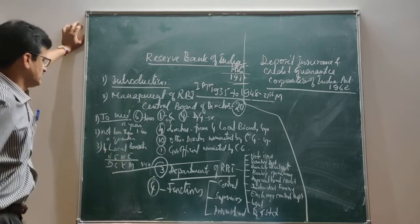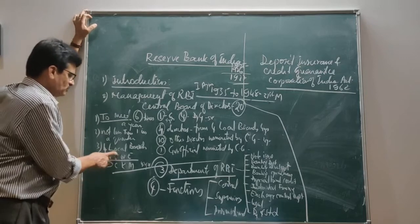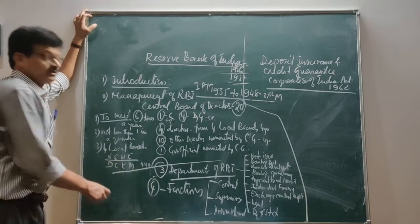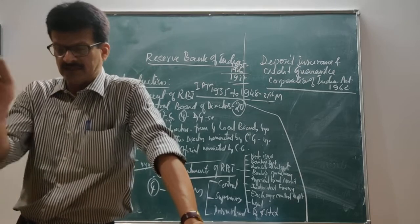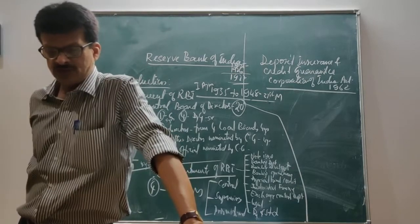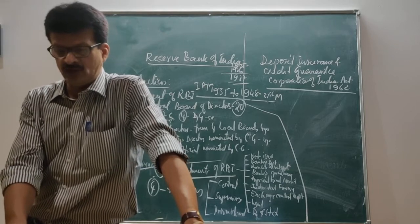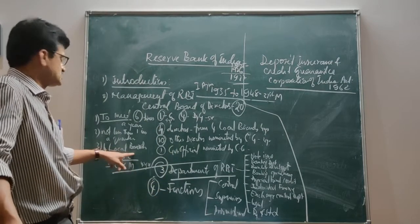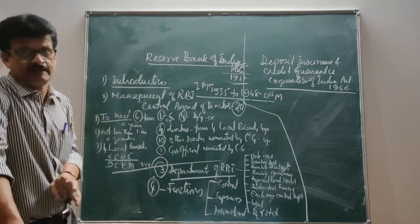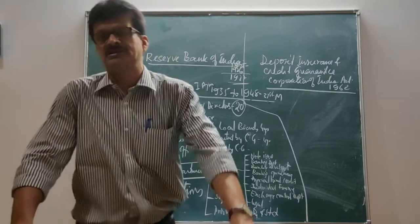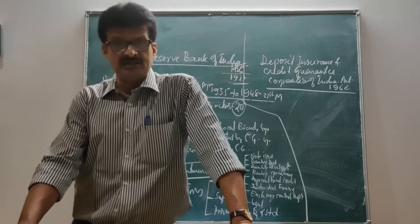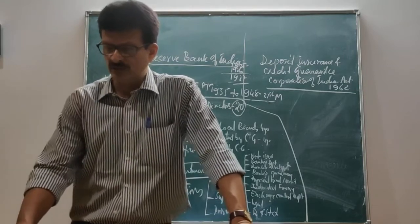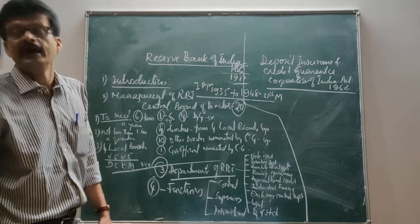The four local boards are situated in Delhi (north), Chennai (south), Kolkata (west), and Mumbai (east). Each of the four local boards comprises five members appointed by the central government. While appointing, they give adequate representation to regional interests, economic interests, indigenous bankers, and the cooperative sector. The members of the local boards are appointed for a period of four years and are eligible for reappointment.